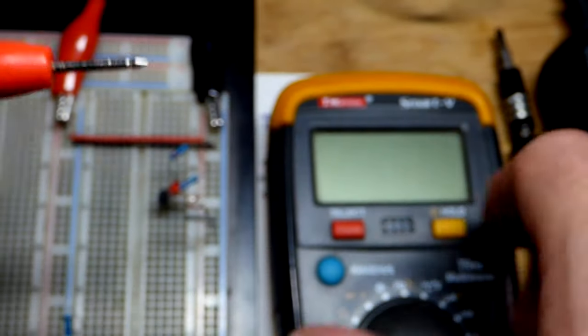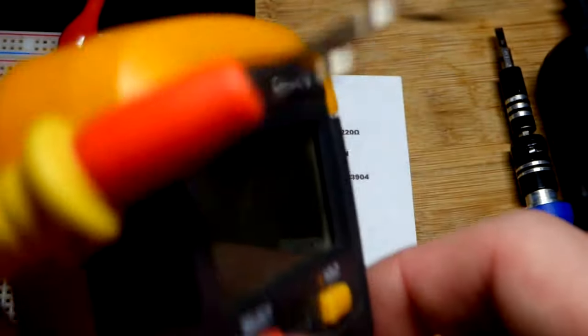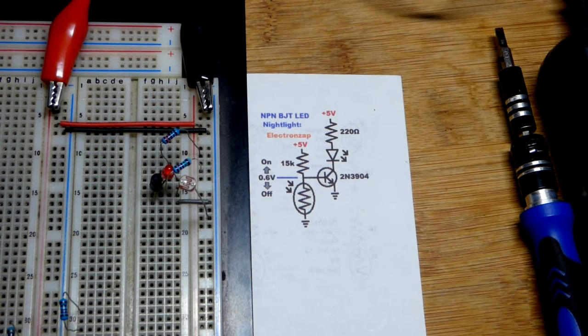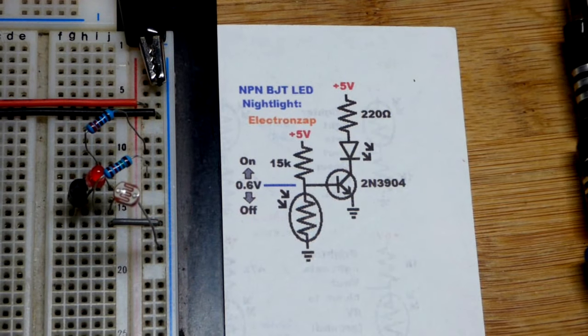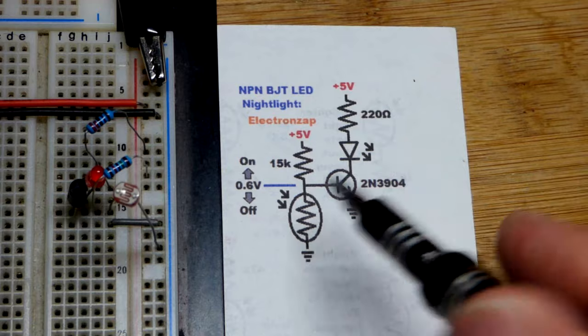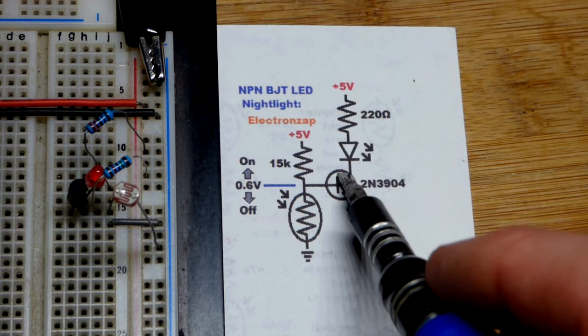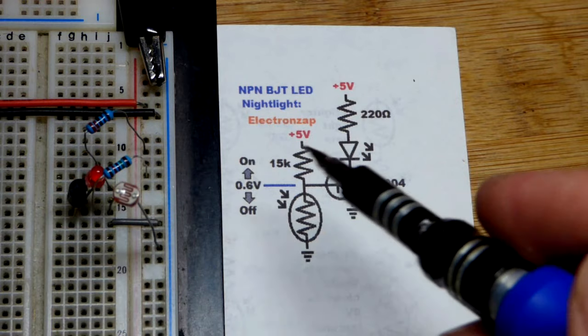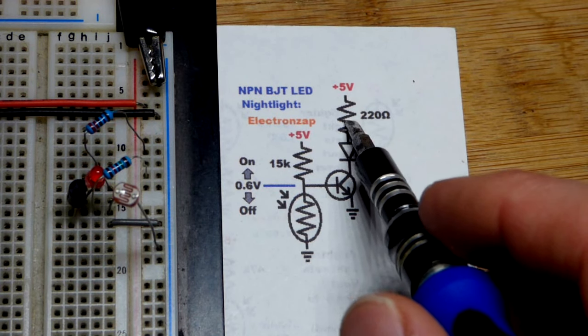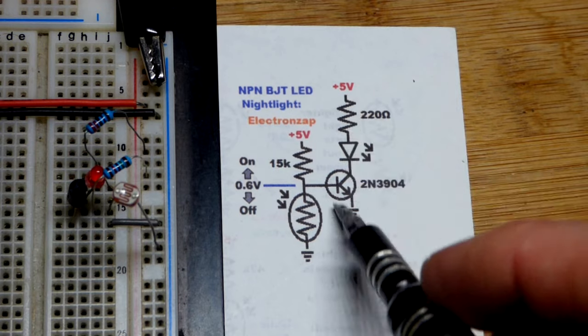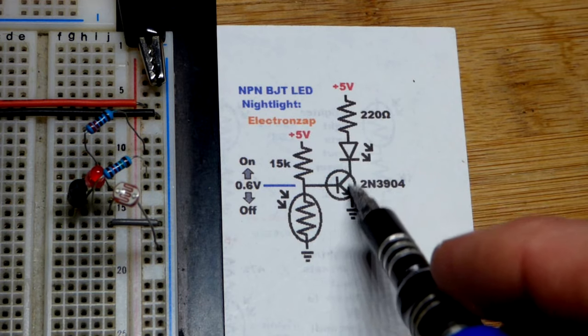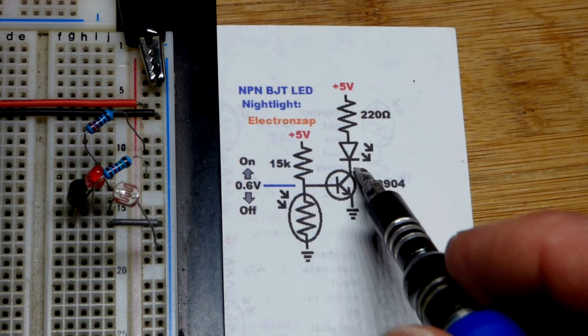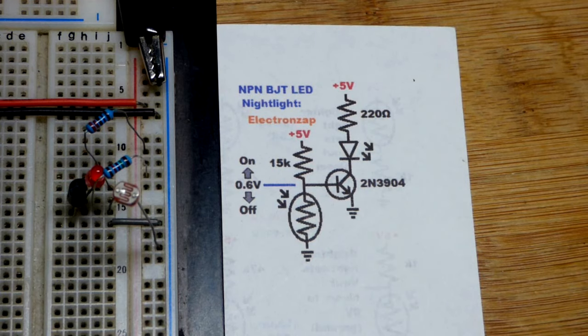Basic bipolar junction transistor stuff. A little bit of base to emitter current allows many times the collector current. The collector current also goes to the emitter, the two currents combine. When you wire it as a switch and the transistor is on fully, it's the load that is setting the current. The LED is part of the load but the resistor sets the current and drops some voltage.